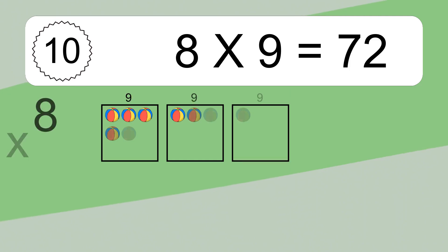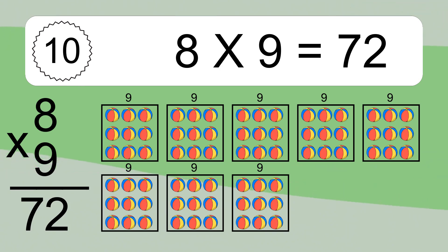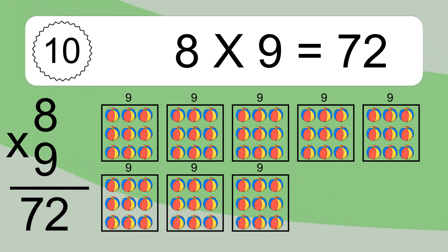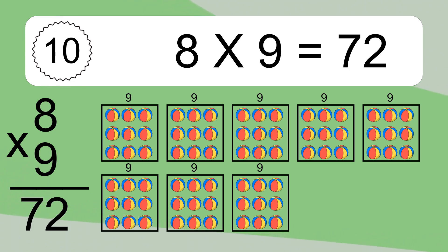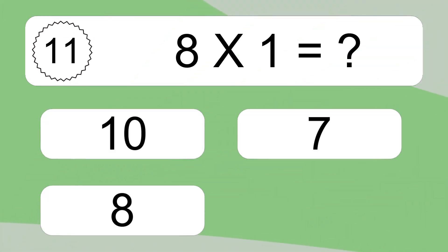8 times 9 equals what? 8 times 9 equals 72. We have 8 boxes and each box has 9 colorful balls inside. If you count all the balls in all the boxes together, you will have 8 times 9 balls. This equals 72 balls.